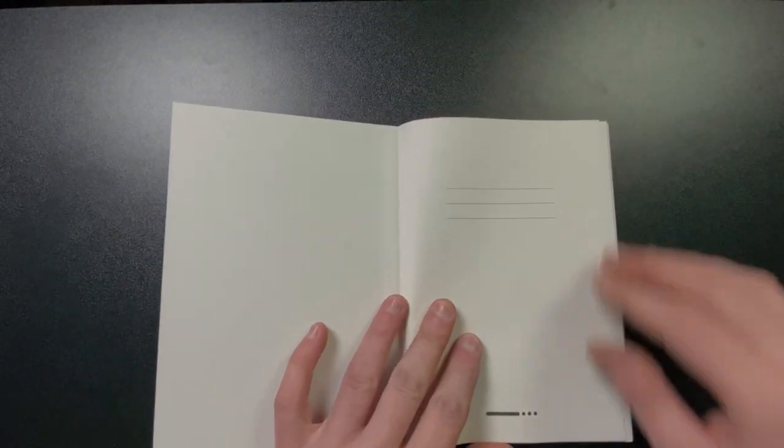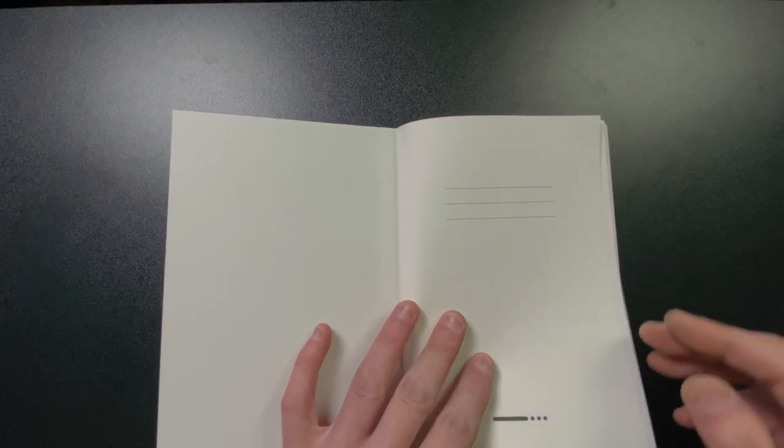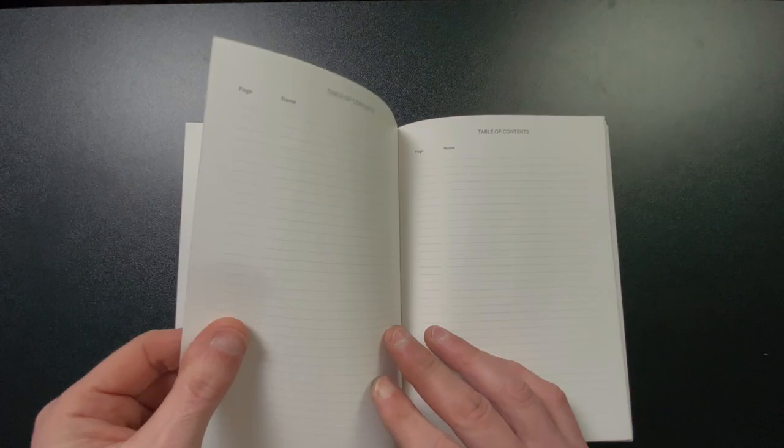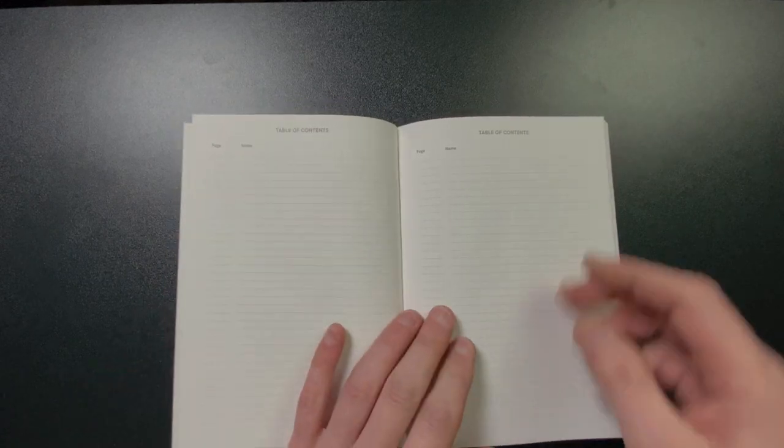There is a bookmark in here. There's a title page, and yes, there is a table of contents slash index. Very cool. And this is that Regalia paper. All the paper that Endless uses, or almost, they do Tomoe River paper as well, but their own in-house paper is called this Regalia paper. I believe it's 80 GSM.